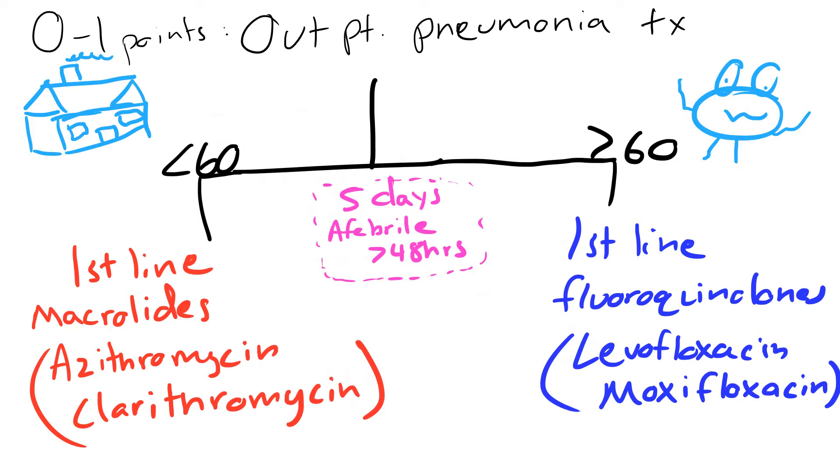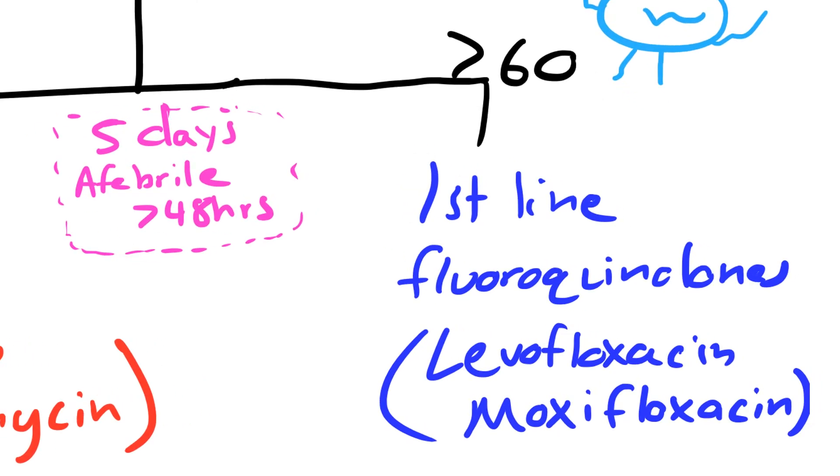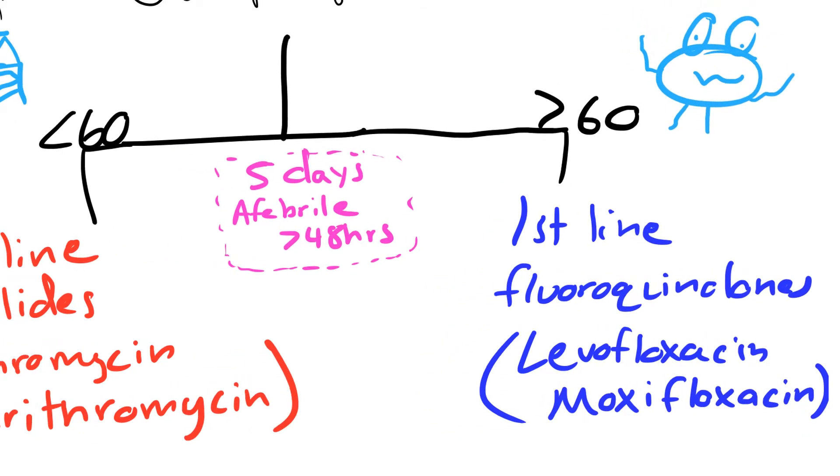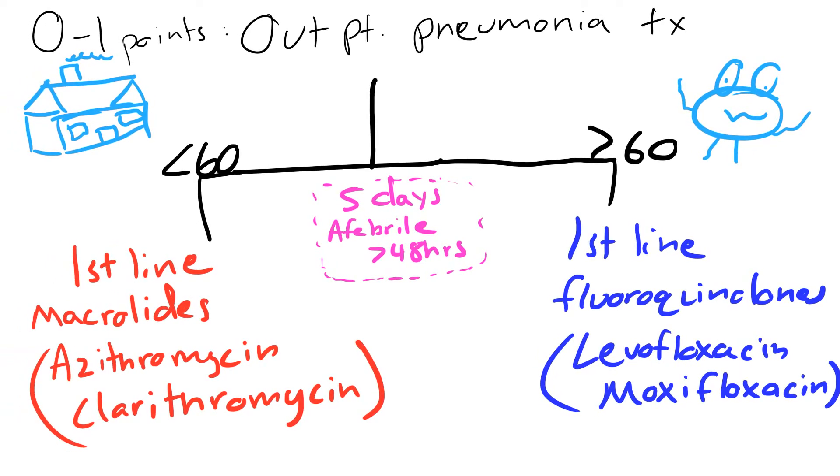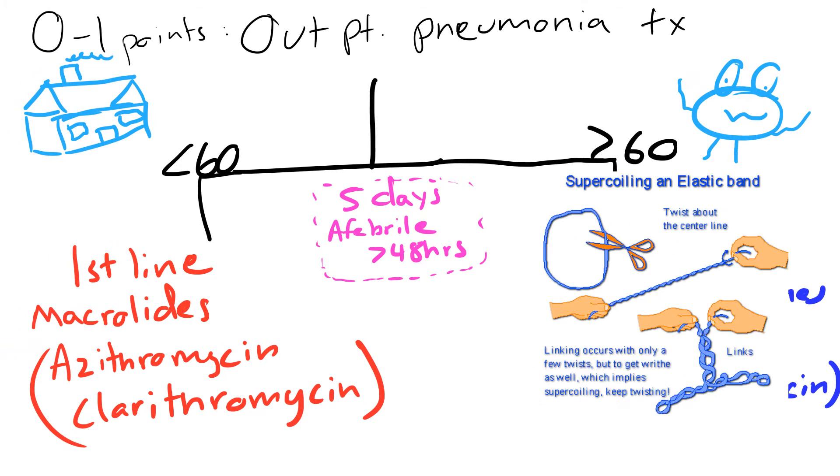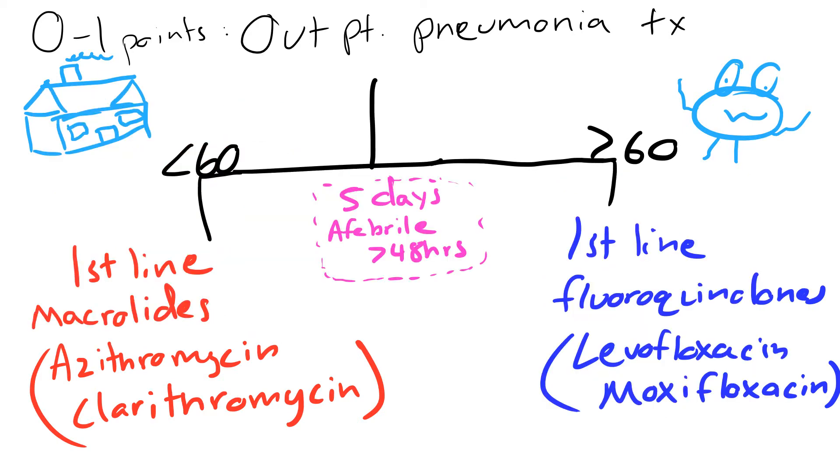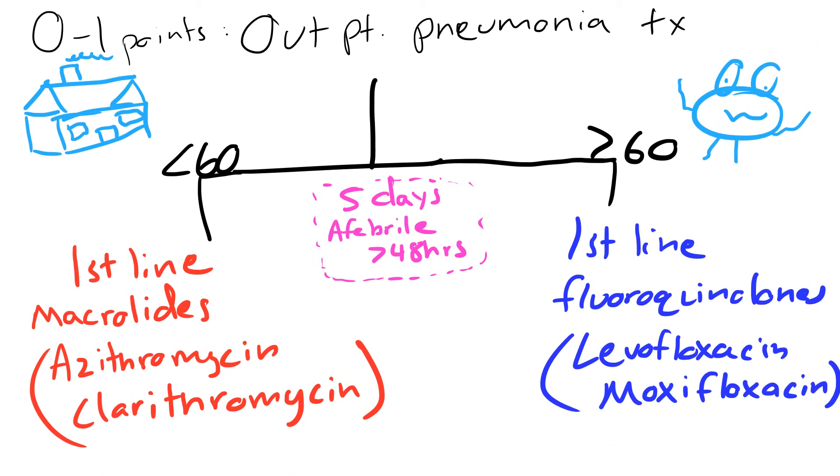For older patients or those with comorbidities or those that have failed treatment with macrolides, then you want to use fluoroquinolones. And they're the first line agent in this case. So like levofloxacin, moxifloxacin, they work by inhibiting the DNA gyrase and that's just the enzyme within the class of topoisomerases. Their job as a DNA gyrase is to prevent super coils within the DNA. So since they can't do their job, you're going to have too many super coils and that's going to increase the stress of the DNA. So eventually it's going to break. For outpatient treatment, you will definitely treat them for five days and you don't want to stop until they've been afebrile for 48 hours.